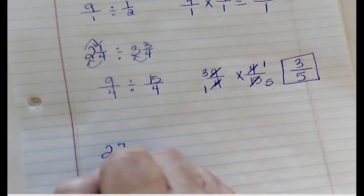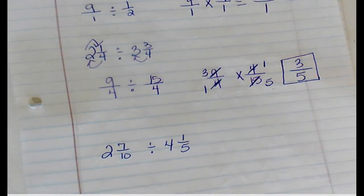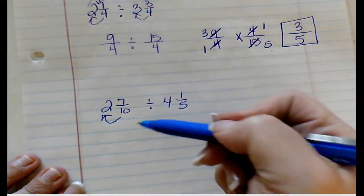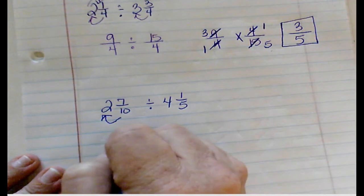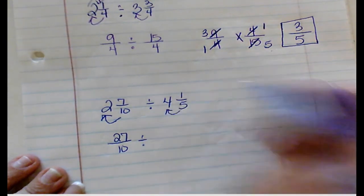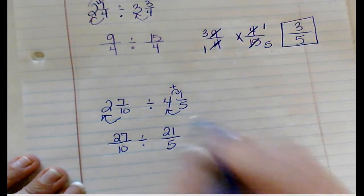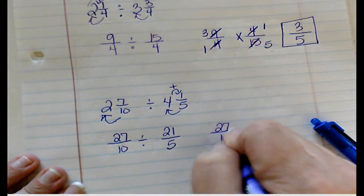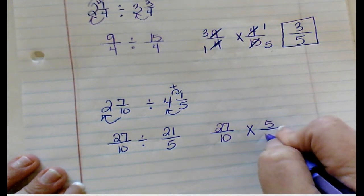2 and 7/10 divided by 4 and 1/5. I have to put this into an improper fraction. 10 times 2 is 20, plus 7 is 27 over 10. Divided by 4 times 5 is 20, plus 1 is 21 over 5. Now I do the keep change flip: 27 over 10 I keep, change to multiply, and I get 5 over 21.